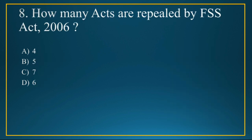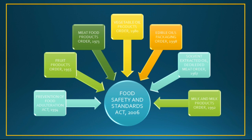Q8: How many acts are repealed by the FSS Act 2006? When FSSAI did not exist, different food laws and regulatory bodies were in place. When the FSS Act came into existence, it repealed all those existing acts, bringing them under one umbrella — the FSS Act 2006. There were a total of seven acts repealed: the PFA Act, Fruit Products Order, Meat Food Products Order, Vegetable Oil Products Order, Edible Oil Packaging Order, Solvent Extracted Oil and Deoiled Meat Order, and Milk and Milk Products Order.